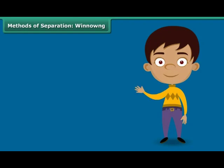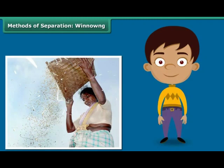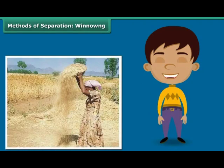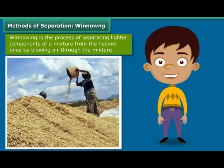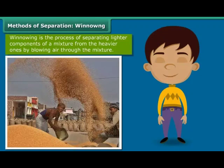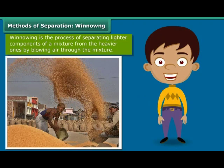During your numerous train trips down the countryside, you would have noticed women standing at a height, shaking a basket held over their heads continuously. They are separating the grain from the husk by simply allowing the wind to blow away the husk and other lighter impurities. The heavier grain falls down on the ground in a heap. This process of separating impurities from the grain by allowing a current of air to blow away the lighter impurities is known as winnowing.